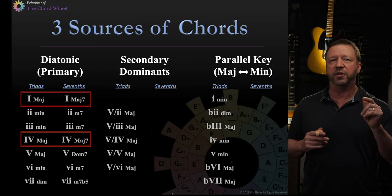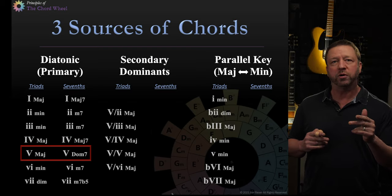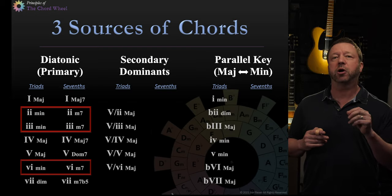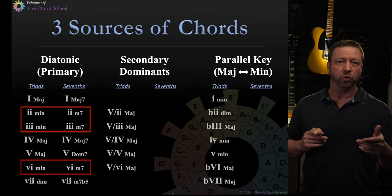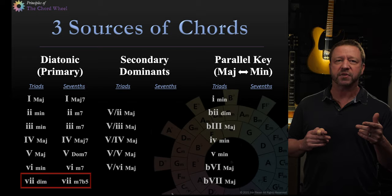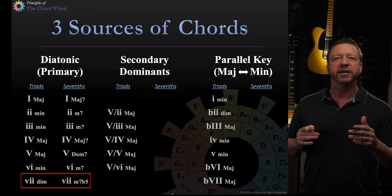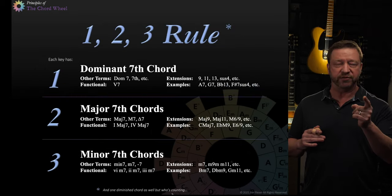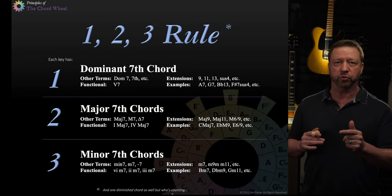The one and the four, those major chords become major sevens. The five chord, that major becomes a dominant seventh. The three minor chords, those all become minor sevens. And then the seven chord, the diminished, becomes a minor seven flat five. Now this brings up a great chord wheel principle that really has helped me in the idea that in each and every key, there are one dominant seventh, two major sevenths, and three minor sevens. Kind of the one, two, three rule. In every key, one dominant seventh.